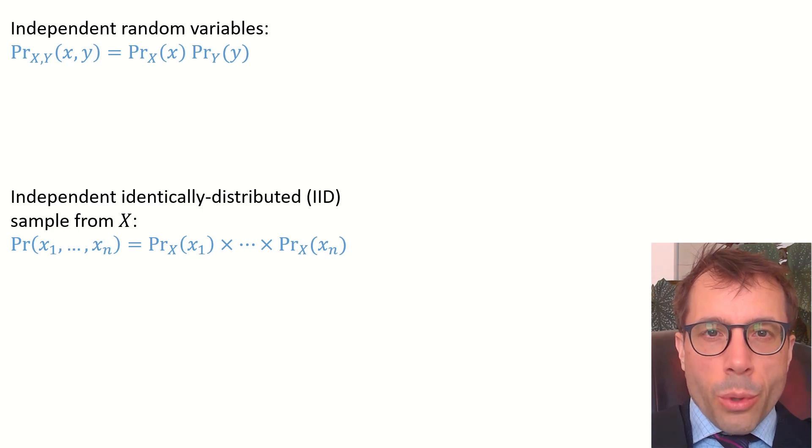If two random variables X and Y are independent, then the likelihood function factorizes. The likelihood of seeing little x comma little y is the likelihood of seeing little x times the likelihood of seeing little y.